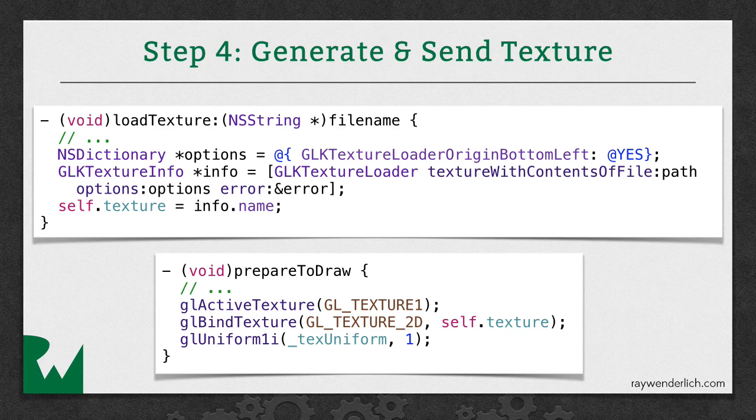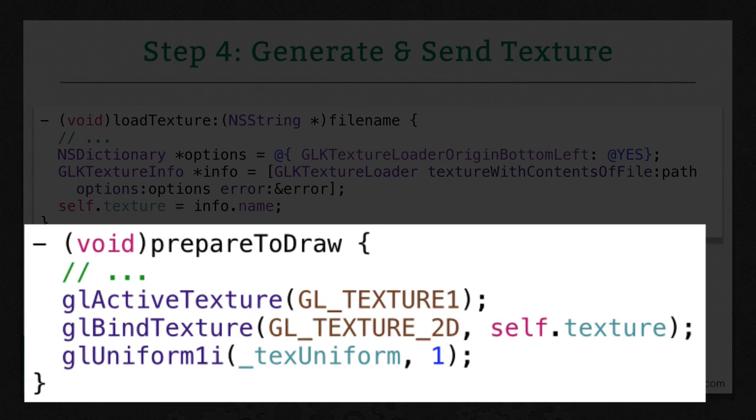Once you've loaded your texture, you need to send a texture unit that has this texture loaded into it before you draw anything. So in your prepare to draw method, you want to activate a texture unit. You want to bind the texture that you got back from the GLKTextureLoader to that texture unit. And then as the uniform, you pass the texture unit that you loaded it into.